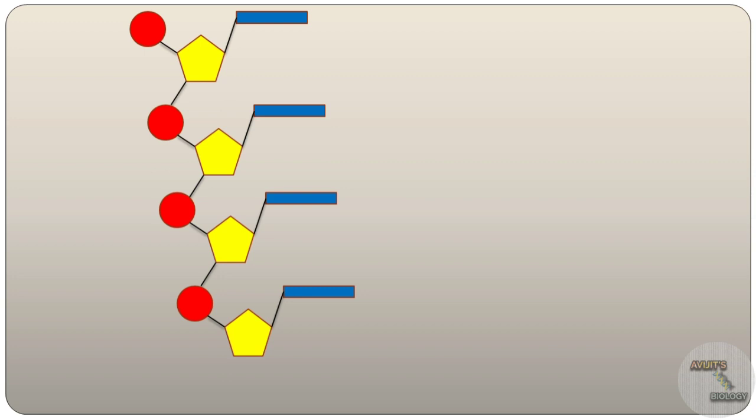The end where a free phosphate group is present is called the 5 prime end, and the end where a free hydroxyl group is present is called the 3 prime end. This is the structure of a strand of RNA. As RNA is a single-stranded molecule, then the structure of RNA will be like this.